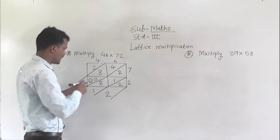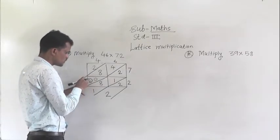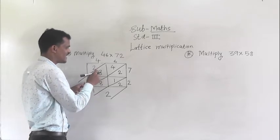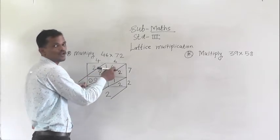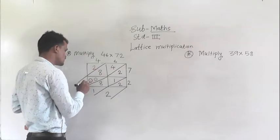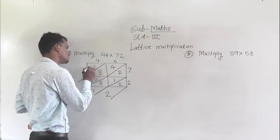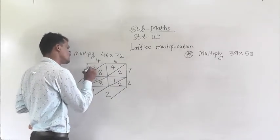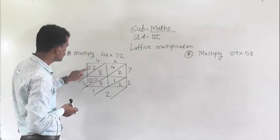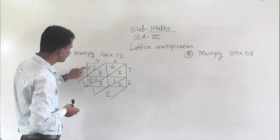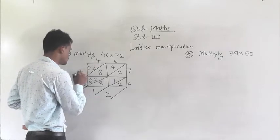Now add this column: 0 plus 1 is 1, 1 plus 8 is 9, 9 plus 4 is 13. So 13 means write 3 right here and 1 carry to the next column. Now here 2 plus 1 carry is 3.